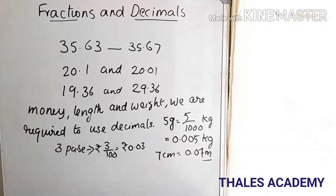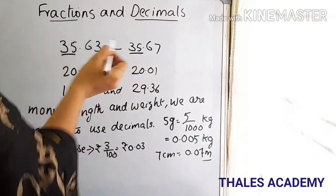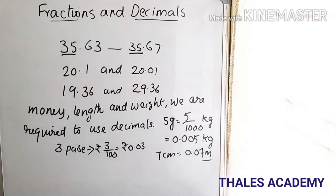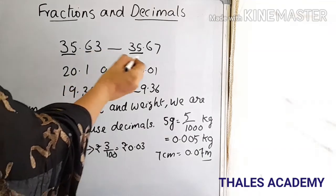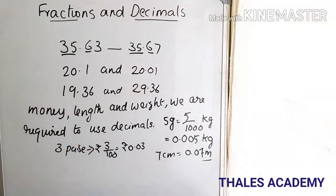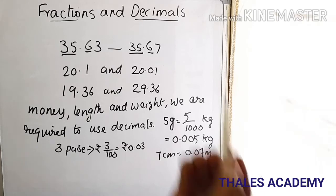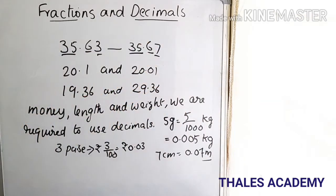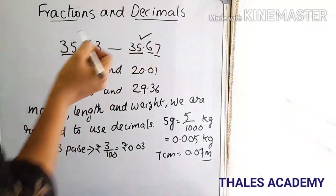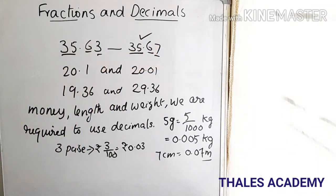We can also compare 35.63 and 35.67. The digits left of the decimal point are the same. On the right, at the tenths position both have 6, but at the hundredths position it is 3 and 7. Since 3 is less than 7, 35.67 is the greater number.